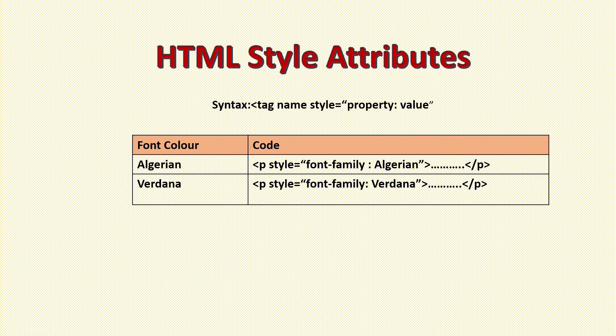The property and value here are CSS property and CSS value. CSS is used to make your web page attractive. So these CSS values we are using inside the HTML program. For example: P style equals font-family colon Algerian, with your sentence and close P. With this tag our sentence will change into Algerian. And the next one is for Verdana font.